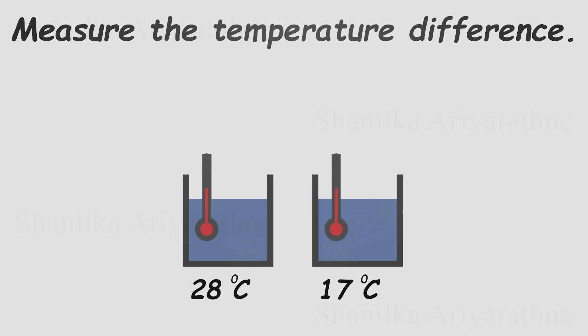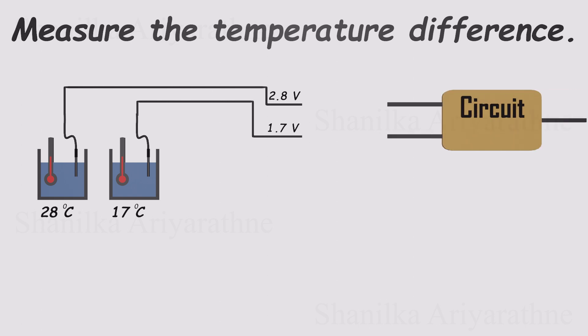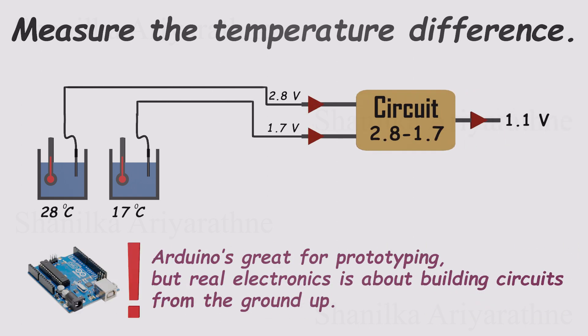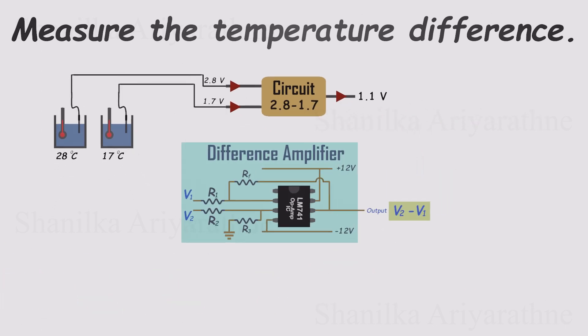The first step is easy. Drop a temperature sensor in each container. Each sensor spits out a voltage that tracks the water's temperature. But here's the puzzle. How do we take those two voltages and get just their difference? Sure, you could grab an Arduino, write some code, and let it do the subtraction for you. But honestly, that's overkill. Using a microcontroller for a job this simple is like rolling out a bulldozer just to plant a single flower. It'll work, but most of the power is wasted. There's a much cleaner solution, a difference amplifier.